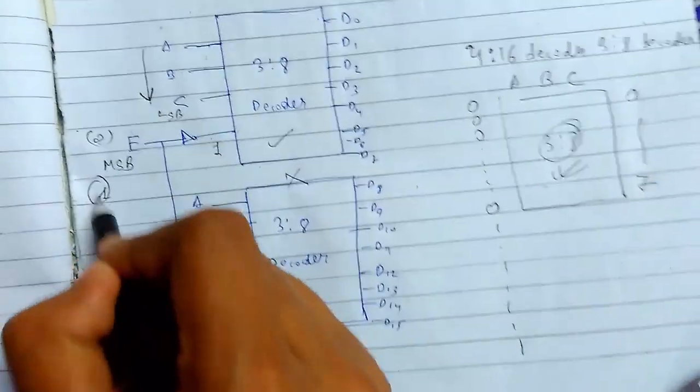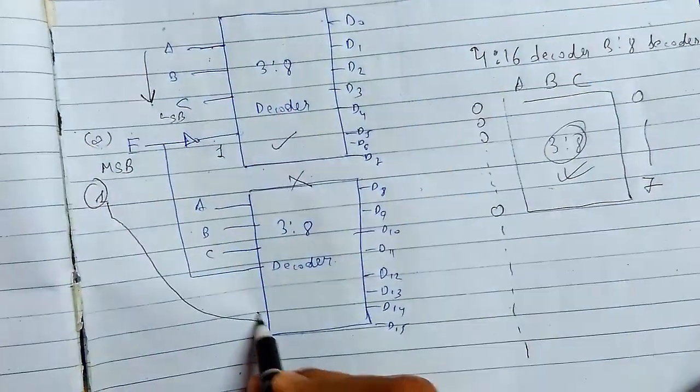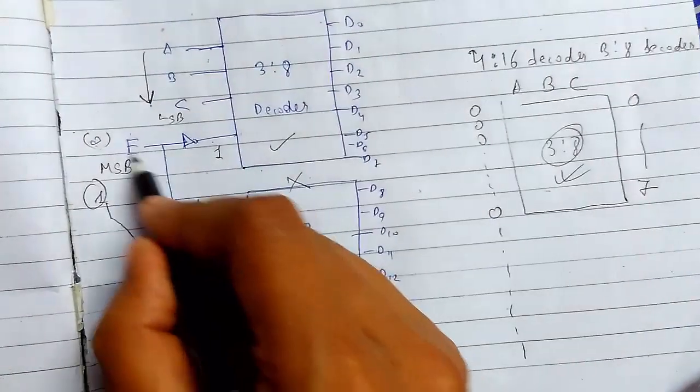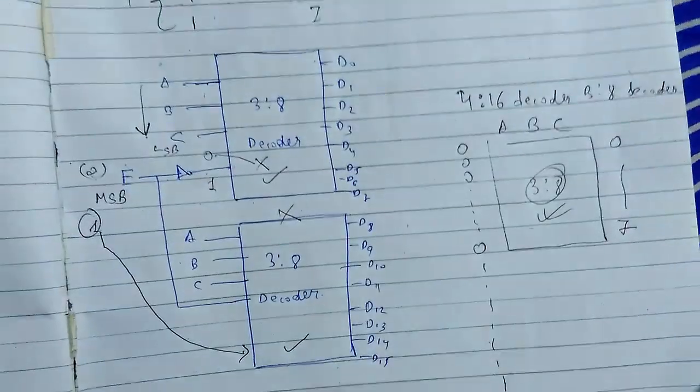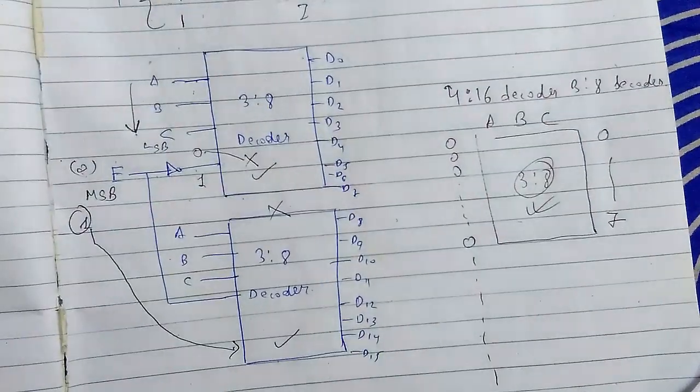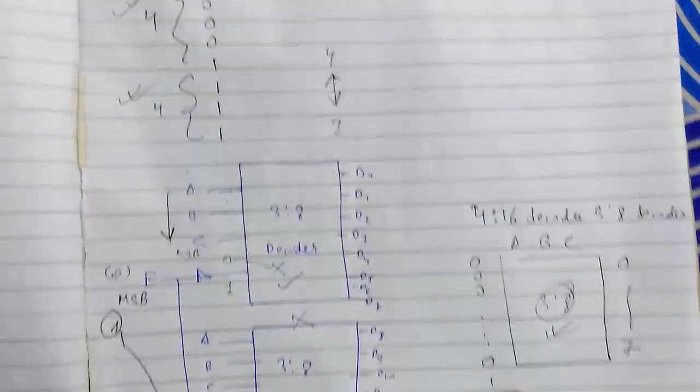When this is set to 1, it will turn the decoder and the complement of 1 is 0. This will deactivate it. This is how the decoder works. Thanks for watching.